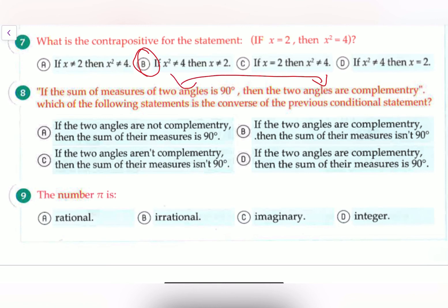We're just kind of switching the spots and let's look for the choice that says that. If the two angles are not, no, this has a not, it's not this one, aren't, same thing. If they are, then the sum of them isn't, same thing. So our answer is D because it says if the two angles are complementary, then the sum of their measure is 90 degrees. Which is just flipping the spots.